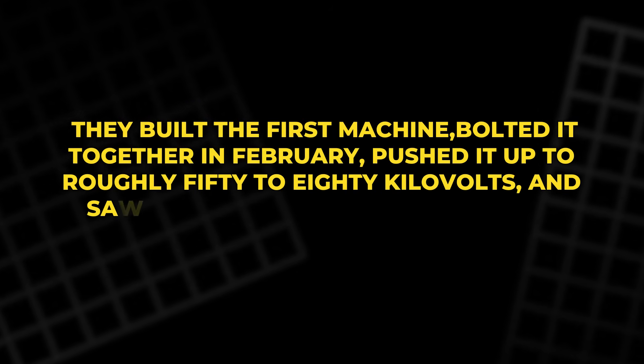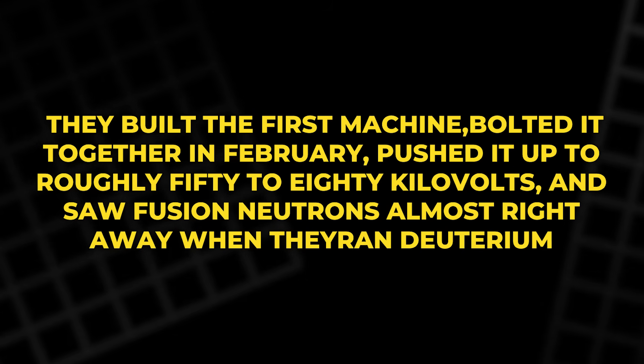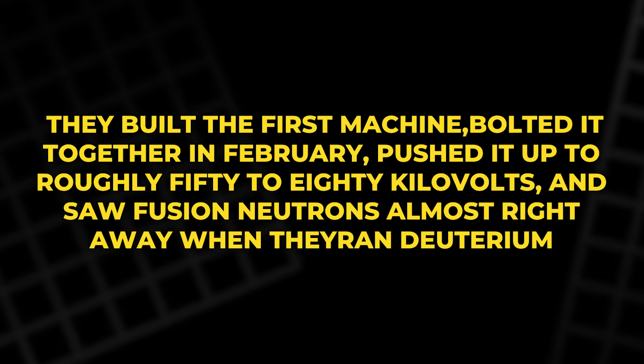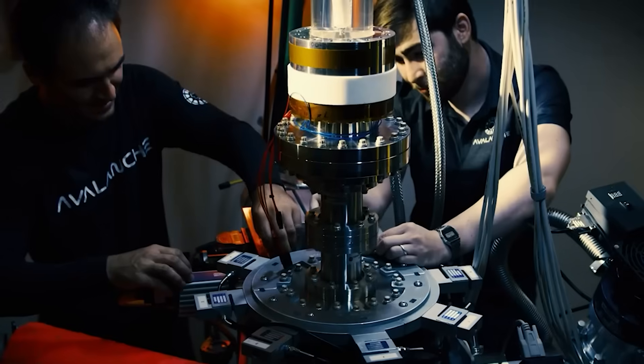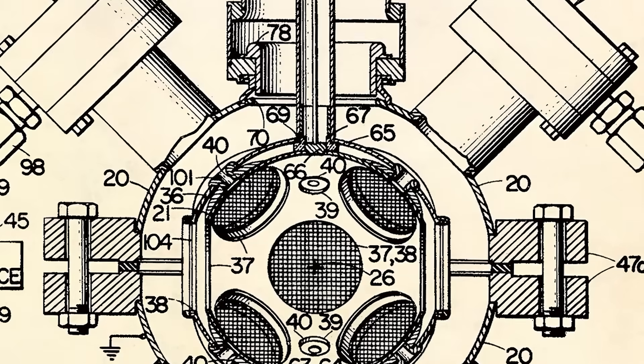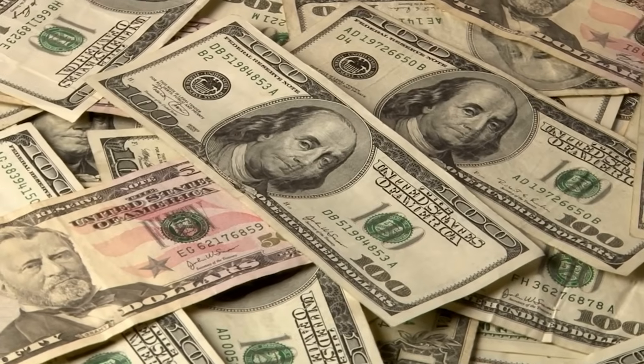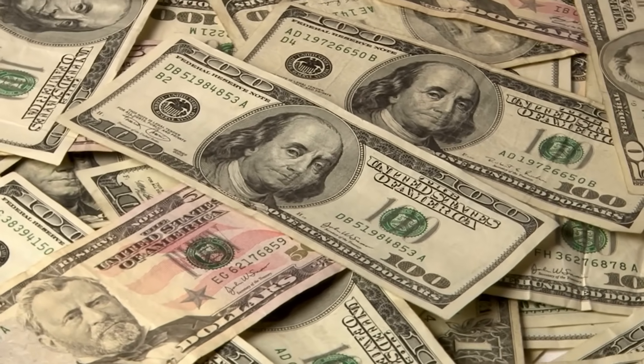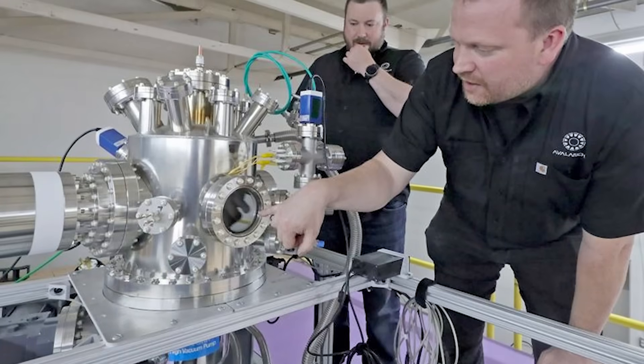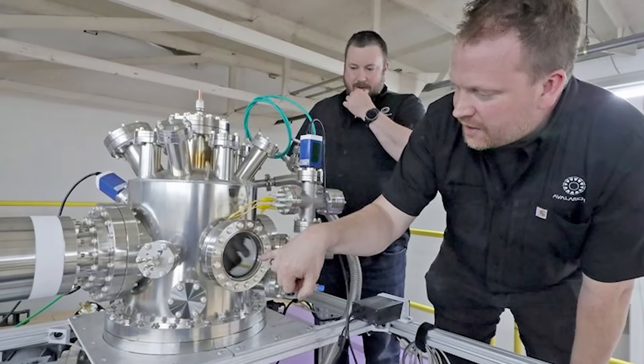They built the first machine, bolted it together in February, pushed it up to roughly 50 to 80 kilovolts, and saw fusion neutrons almost right away when they ran deuterium. That early proof mattered. It showed they could go from nothing to a working-first Orbitron with five million dollars or less. That success helped unlock Series A funding. But Series A was not about a janky demo. It was about doing things no one had done in electrostatic fusion.